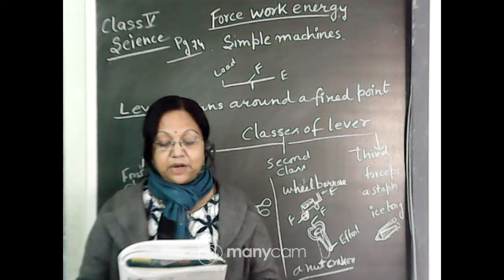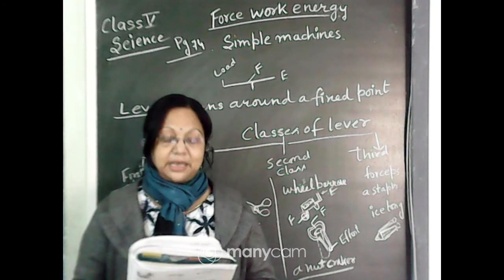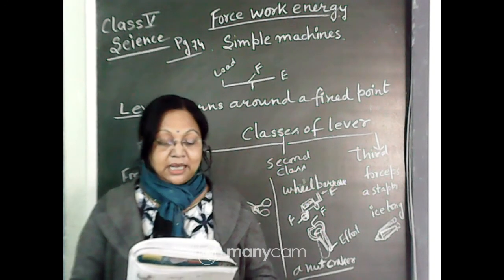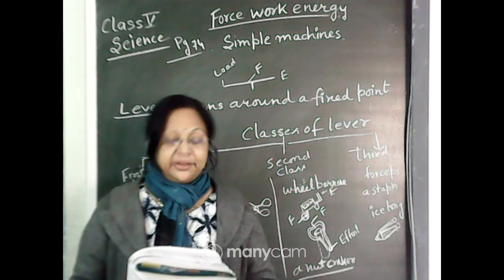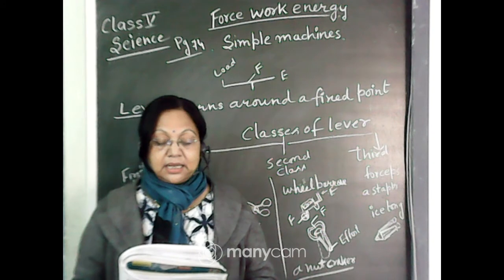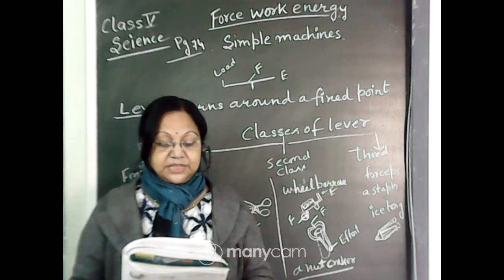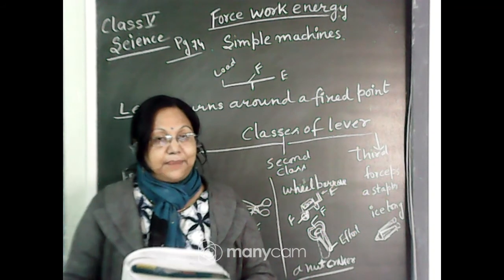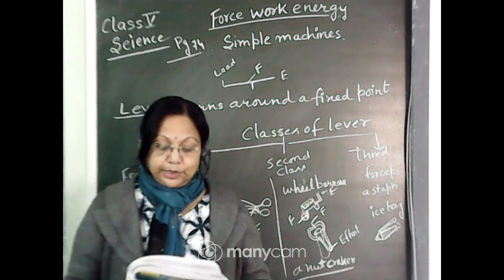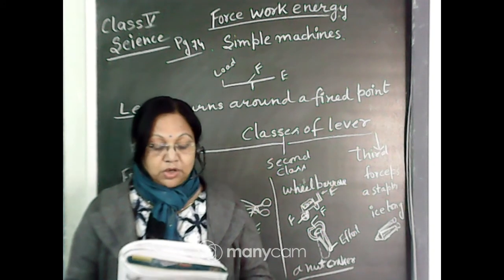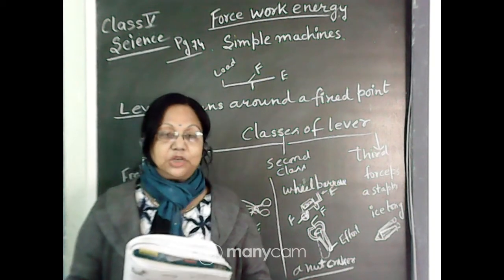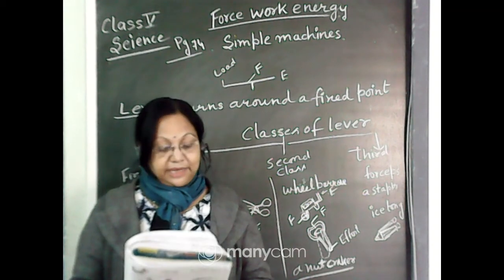Simple machines are of different types: lever, wheel and axle, pulley, wedge, inclined plane, and screw. First, we will talk about the lever.